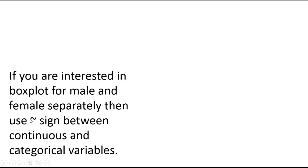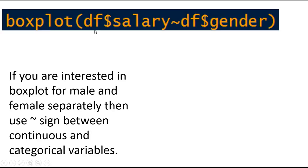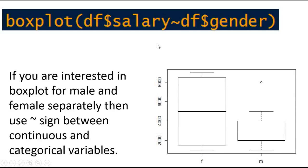If you are interested in the boxplot for male and female separately, then you will have to use this tilde sign between a continuous variable — that is salary or age — and a categorical variable — that is gender. So boxplot, then extract the salary which is the continuous variable, and also extract the gender variable which is the categorical variable, and in between these two use the tilde sign, then press enter.